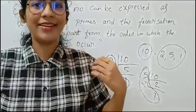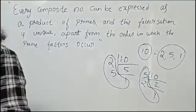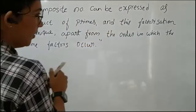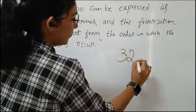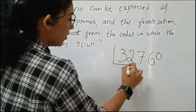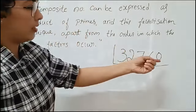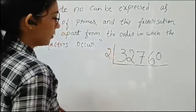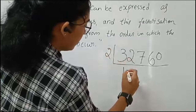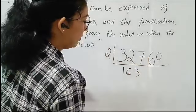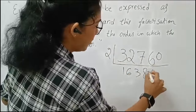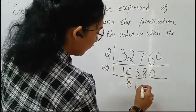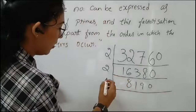Hope you understand this theorem clearly. We can explain it by using a composite number as an example. Since the ones place is 0, we can either start with 5 or 2. So let's start with 2. We get 2 times 16,380, and continuing the factor tree: 2, 2, 3, and so on. The next prime number is 2, so it can be written accordingly.